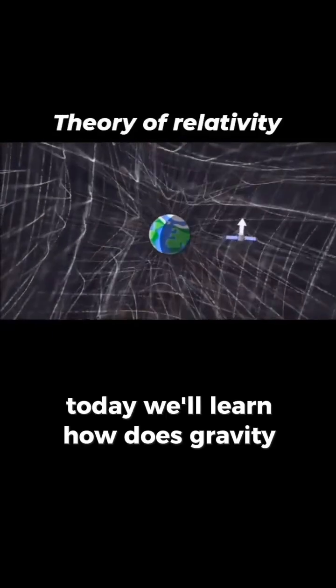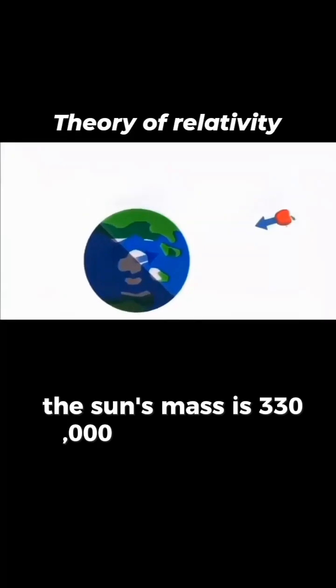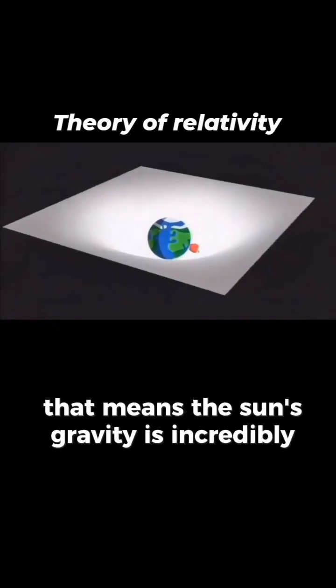Today we'll learn how gravity pulls toward the sun. The sun's mass is 330,000 times bigger than Earth's. That means the sun's gravity is incredibly strong.